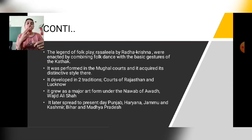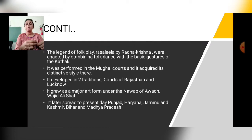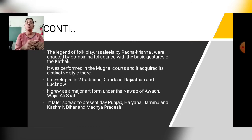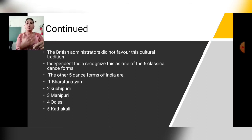Kathak developed in two traditions — two gharanas. One is in the court of Rajasthan (Jaipur Gharana) and another in the court of Lucknow (Lucknow Gharana). It grew as a major art form under the Nawab of Awadh, Wajid Ali Shah. It later spread to present-day Punjab, Haryana, Jammu and Kashmir, Bihar, and Madhya Pradesh. The British administration did not favor this cultural tradition, but independent India recognized it as one of the six classical dance forms after 1947.